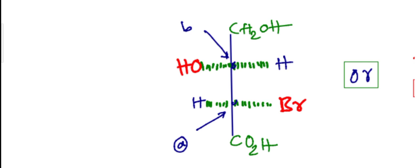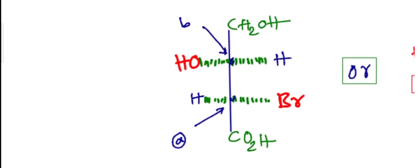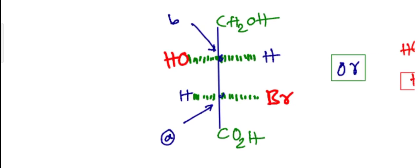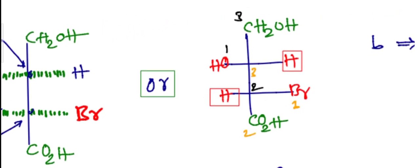While in case of horizontal line, the atoms or groups are present above the plane. So here is the presentation of how one can assign nomenclature.